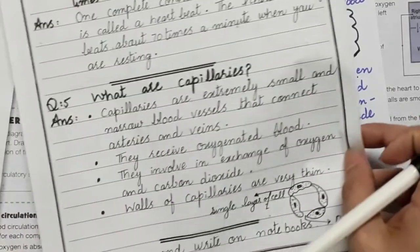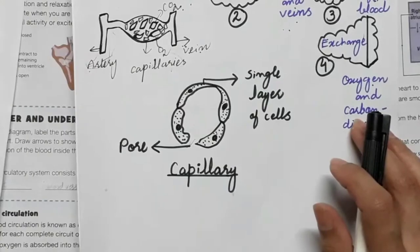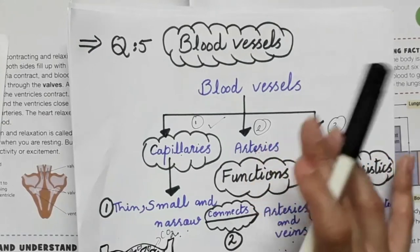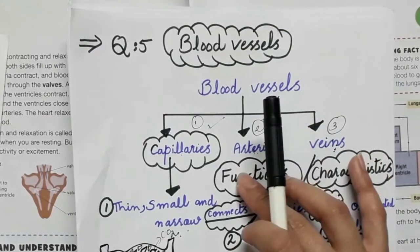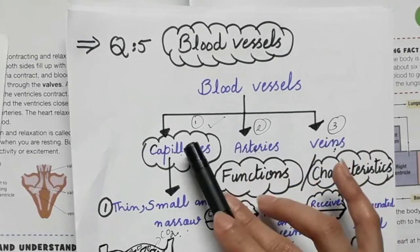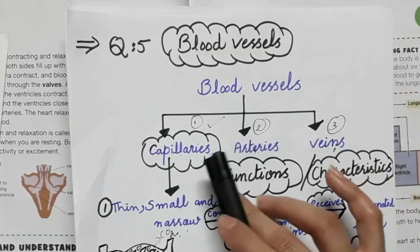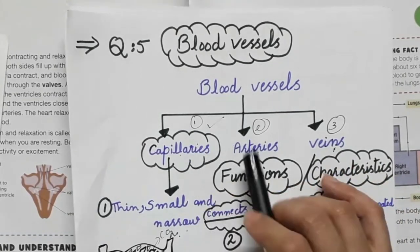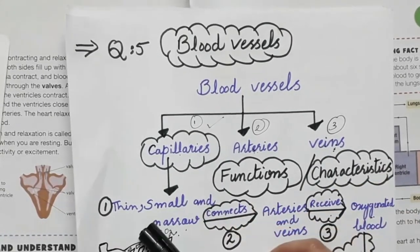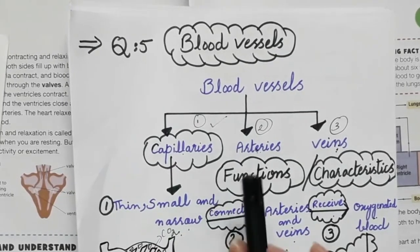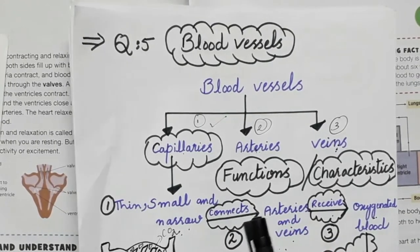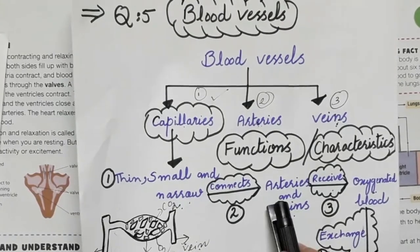The next question is: what are capillaries? Before this, you must have knowledge about blood vessels. Blood vessels are tubes which are present in our circulatory system and are connected to our heart. There are three different kinds of blood vessels: first, capillaries; second, arteries; and third, veins. Capillaries are thin, small, and narrow tubes. Their function is to connect arteries and veins.